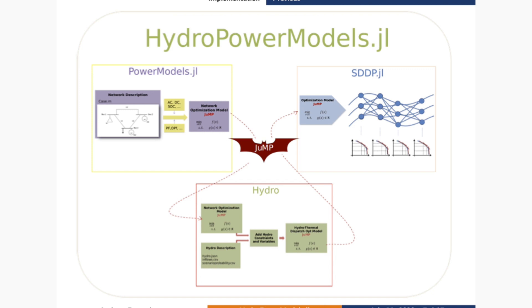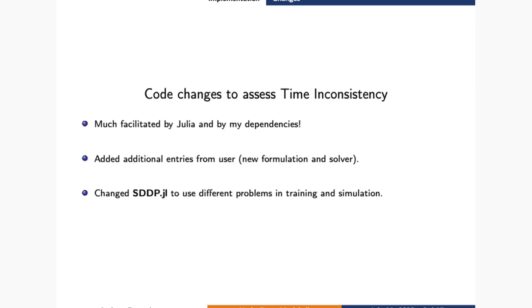The idea here was to create a framework where people could analyze the impacts of time-inconsistent policies. Here we have a slide from the previous JuliaCon presentation, showing how HydroPowerModels uses its dependencies. PowerModels.jl parses network case data from input files and creates the optimal power flow problem in JuMP from the formulations defined by the user. We add the necessary hydro variables and constraints and pass this problem to SDDP.jl, which creates the multistage stochastic problem and solves it using the SDDP algorithm. To allow HydroPowerModels to assess time inconsistency, we needed some changes to the framework.